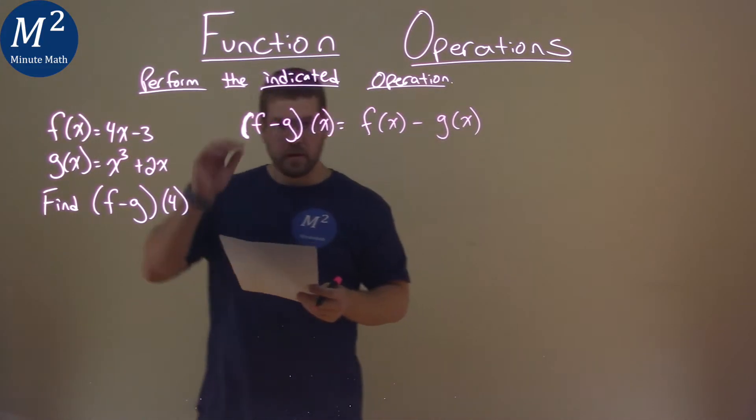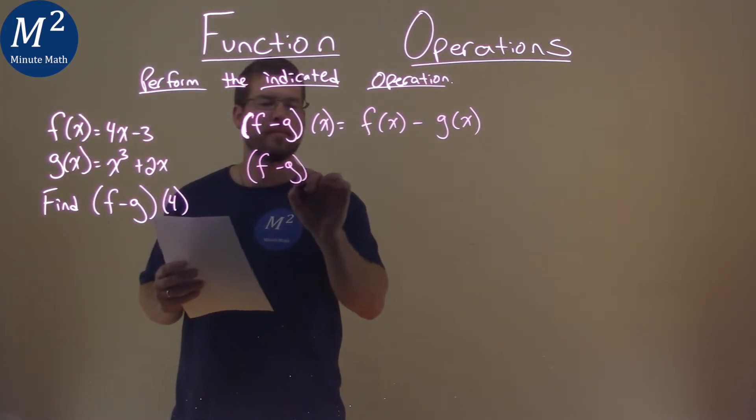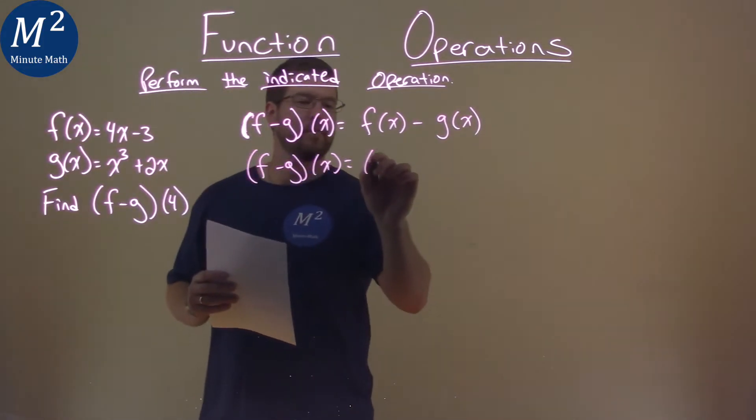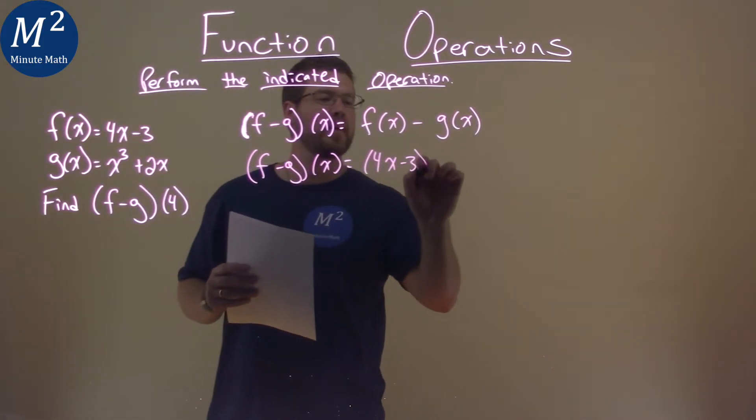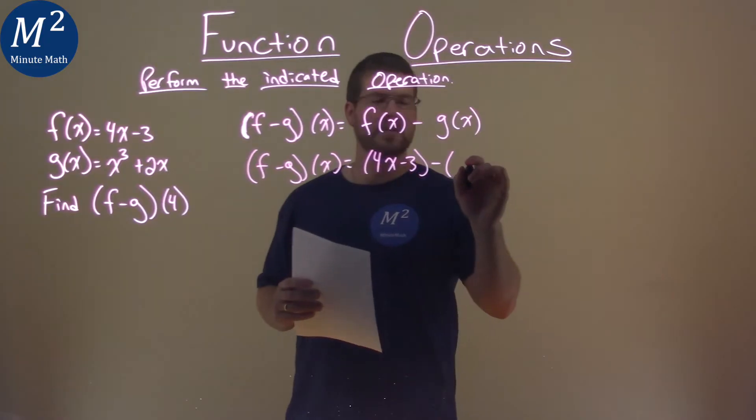From here, we want to substitute them in. So, (f - g)(x) equals f(x), which is 4x minus 3, subtracted by x cubed plus 2x, which is g(x).